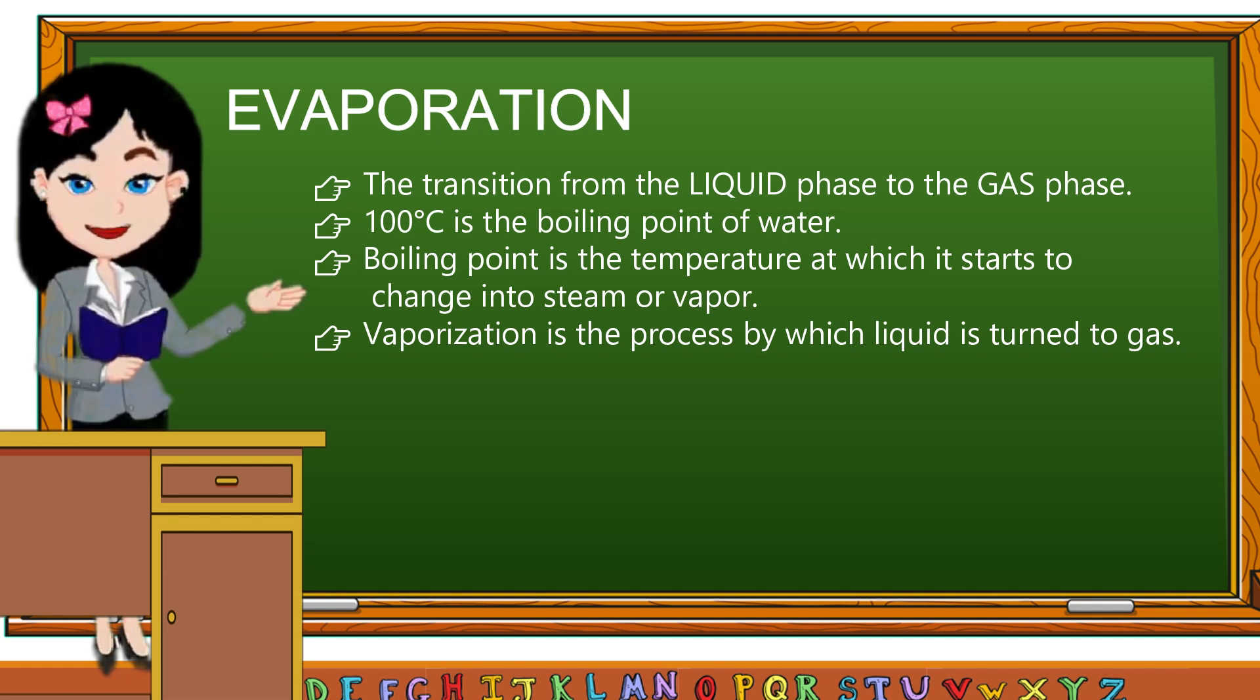The process by which liquid transforms into gas below its boiling point is called evaporation. Water evaporation can occur even without heating the water. Leave a glass of water undisturbed over a period of time and the water volume will have decreased due to evaporation.